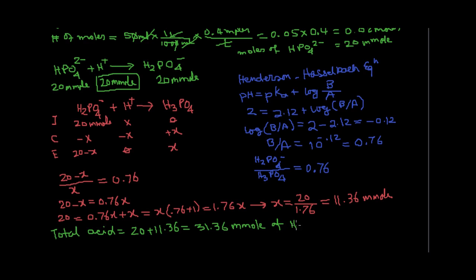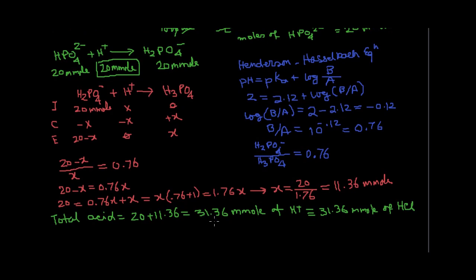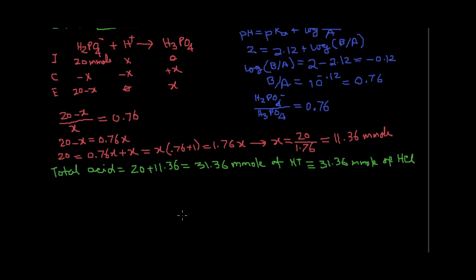H plus, of H plus we need, which is really the same as 31.36 millimole of HCl, because they are 1 to 1. The question is, what volume of this acid, which was 1.0931 molar HCl, contains 31.36 millimole of HCl?